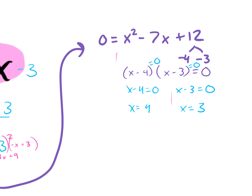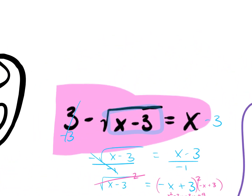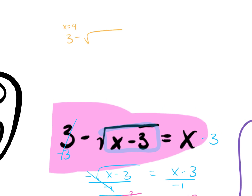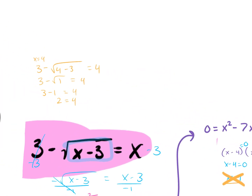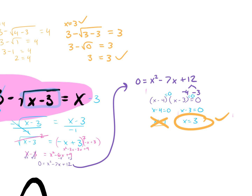We plug in both to check. Plugging in 4: 3 minus the square root of 4 minus 3 equals 4, which gives 3 minus 1 equals 2. Does 2 equal 4? No — so x equals 4 is an extraneous solution. Plugging in 3: 3 minus the square root of 3 minus 3 equals 3, which gives 3 minus 0 equals 3. Does 3 equal 3? Yes. So our only answer here is x equals 3.